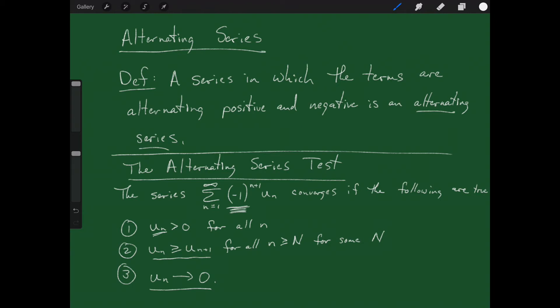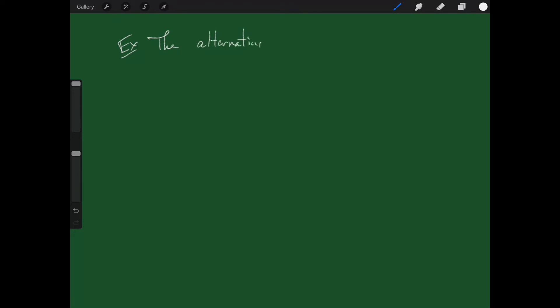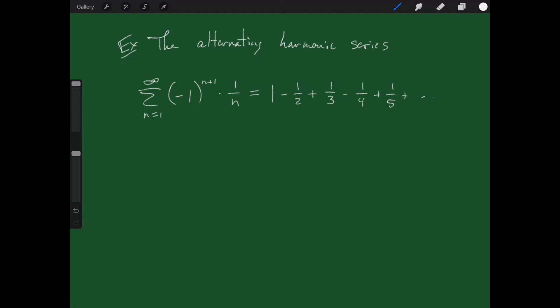Let's now take a look at a very standard example: the alternating harmonic series. We've already shown in the past that the harmonic series diverges. But let's look at the alternating harmonic: the sum from n equals 1 to infinity of negative 1 raised to the n plus 1 times 1 over n. If we write this out, the first term is 1, then we subtract a half, add a third, subtract a fourth, add a fifth, and so on.